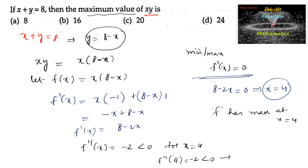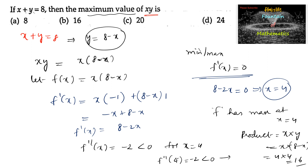So we can say f has maxima at x is equal to 4. Therefore the maximum value: if x is equal to 4, then y is also equal to 4, and the product xy is equal to x into 8 minus x, that is 4 into 8 minus 4, which is 4 into 4 equals 16. So 16 is the answer — option B is the right answer.